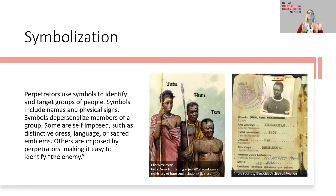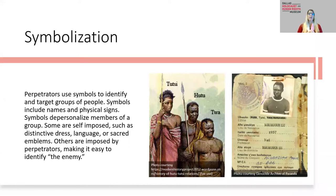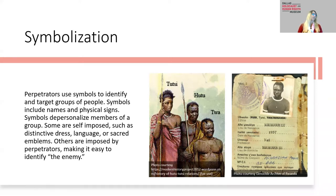From classification, we very quickly see symbolization. Symbolization is when perpetrators use symbols to identify and target groups of people — symbols include names and physical signs. Symbols are used in genocide to depersonalize members of a group for hateful purposes. They are frequently self-imposed — a distinctive dress, language, or sacred emblem already part of the victim group's identity. Other symbols can be imposed by the perpetrator group to make it easier to identify the enemy.